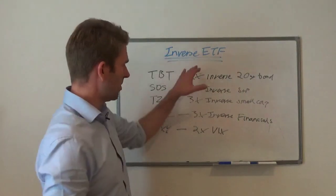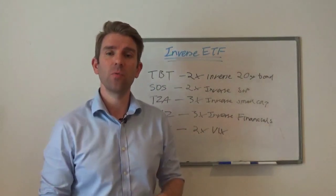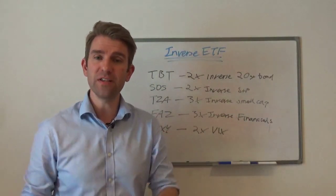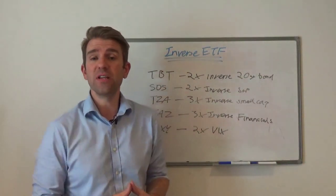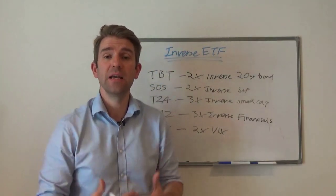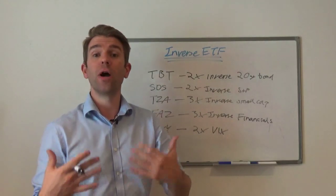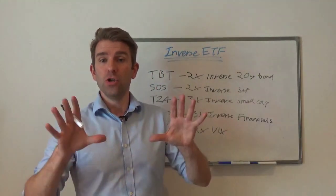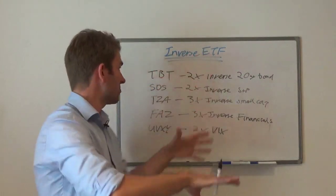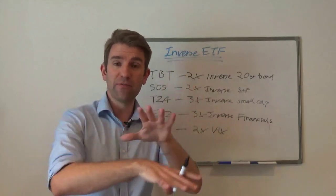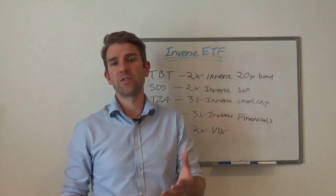What about a leveraged ETF? Leverage just magnifies the gains — it aims to do two or three times the gains of the underlying. So if you're talking about a leveraged S&P 500 ETF, the S&P goes up 2%, then your ETF will go up 4%, and vice versa — down 2%, your ETF will go down 4%. You can also combine the two and have a leveraged inverse, so you could have double leverage but inversed: as it goes up 2%, yours goes down 4% and vice versa. You have to know what you're actually buying.